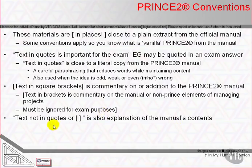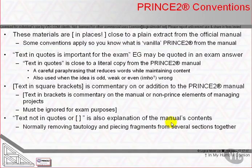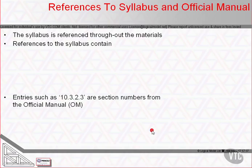Text not in quotes or square brackets is also explanation of the manual's content. Normally, it's piecing together fragments from different chapters and different topic areas that are all talking about the same subject.